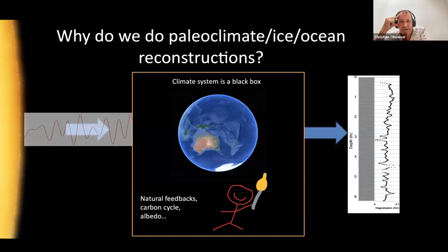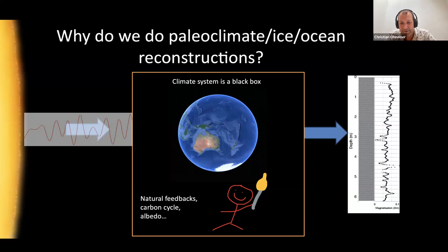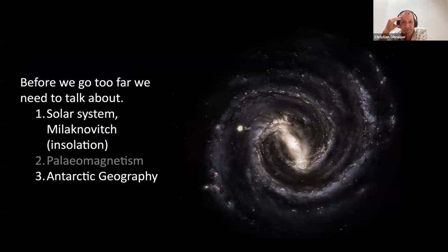Why do we do the paleoclimate part? The sun gives us incoming solar radiation — day, night, winter, summer, and on long timescales, glacial-interglacial cycles driven by Milankovitch cycles. The Earth transforms it through a climate system black box: natural feedbacks, the carbon cycle, albedo. We are part of that black box, and we've just done something to it. A good thing to do is figure out how the black box works by going to the paleoclimate record and seeing what secrets it holds before we perturbed the system.